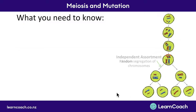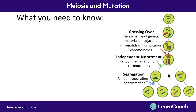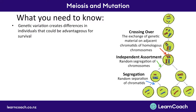To recap: there are three things in meiosis that cause genetic variation. Independent assortment is where chromosomes are randomly separated; segregation is the random separation of each chromatid to create four different daughter cells; and crossing over is when genetic material in two adjacent chromatids swaps over. This genetic variation overall creates differences in individuals that could be advantageous for survival — this is the overarching theme you should include in your answers.